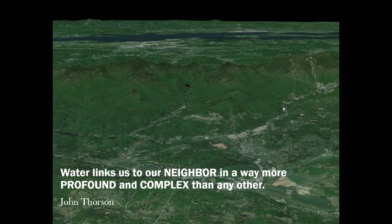There's a great quote from John Thorson: 'Water links us to our neighbor in a way more profound and complex than any other.' Many of you with neighbors know that the connection of water falling on your property and your neighbor's property - and how it flows onto and off of your property, perhaps causing damage to or from the road - really highlights that connection between neighbors through water.